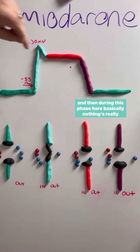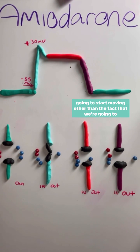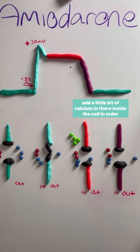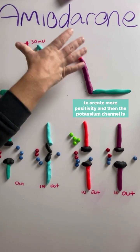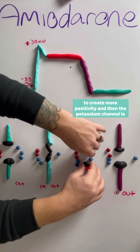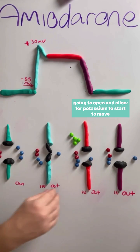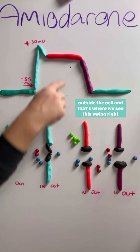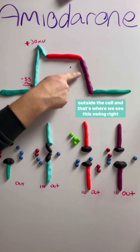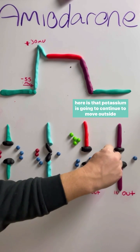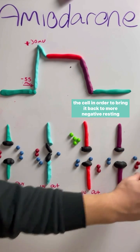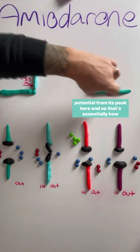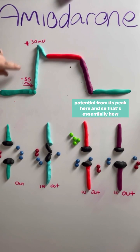During this phase here, basically nothing's really going to start moving other than the fact that we're going to add a little bit of calcium inside the cell in order to create more positivity. Then the potassium channel is going to open and allow potassium to start moving outside the cell. And that's where we see this swing right here — potassium is going to continue to move outside the cell in order to bring it back to a more negative resting potential from its peak.